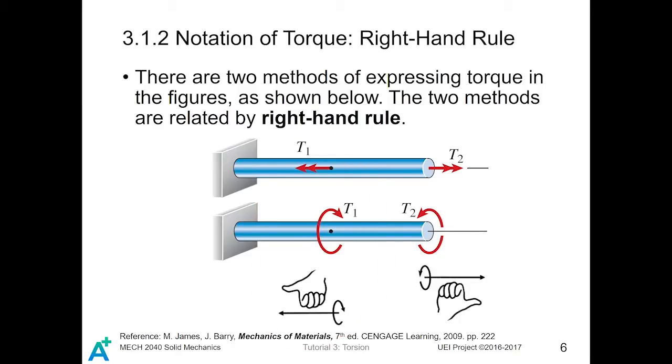There is an advantage to express the torque in this way, in the double arrow form. That is, you can easily identify that, okay, this is a positive torque.